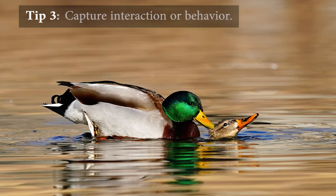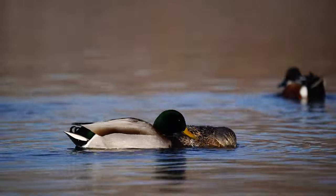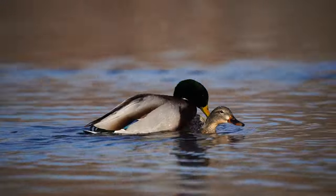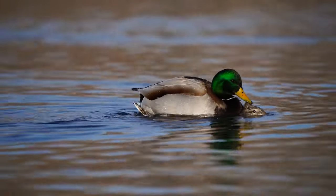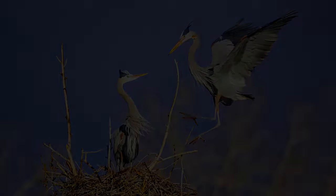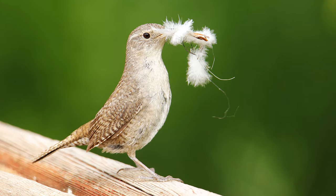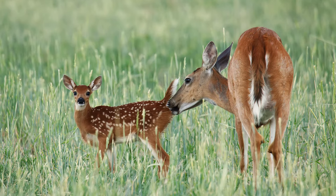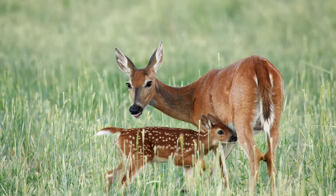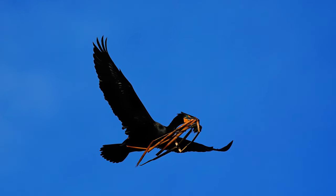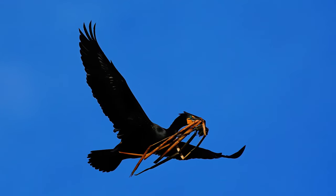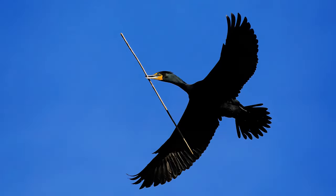Tip number three is to show interaction between two individuals — they can be of the same species, or even different species — something where they're fighting or interacting together. Beyond interaction, you can also get great above-average shots by just showing some behavioral shots. Here are a few examples of behavioral shots that I find interesting on a really common species — a double-crested cormorant. I've got some nice images of these guys carrying nesting material during the springtime.